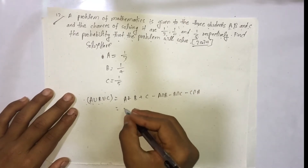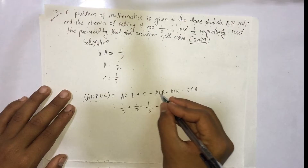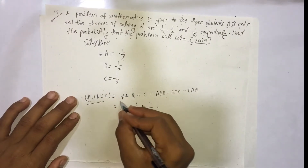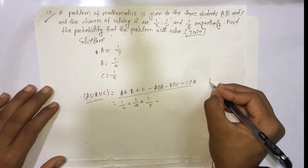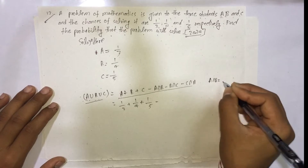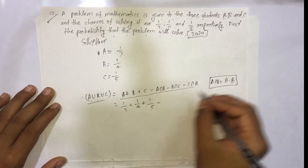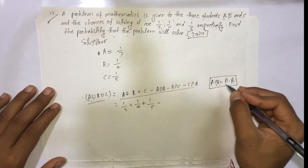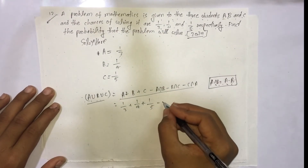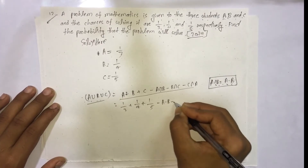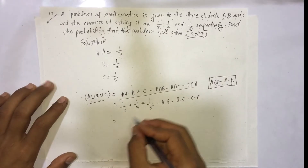The value of A is 1/3, plus 1/4, plus 1/5, minus A intersection B. P(A intersection B) equals the probability of A multiplied by the probability of B, since they are independent.